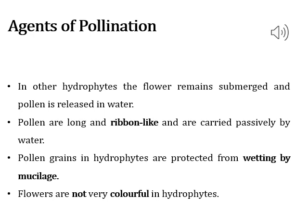In seagrasses, female flowers remain submerged in water. Pollen grains are long and ribbon-like; they are carried inside the water and reach the stigma. The pollen grains of most water-pollinated species have a mucilaginous covering to protect them from wetting. Not all aquatic plants use hydrophily — in most aquatic plants, flowers emerge above the level of water for entomophily and anemophily. Water-pollinated flowers are not very colorful and do not produce nectar.